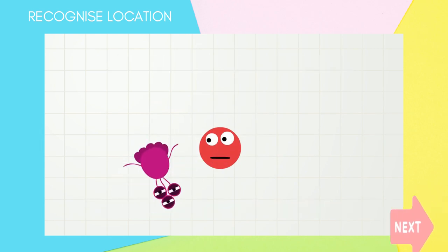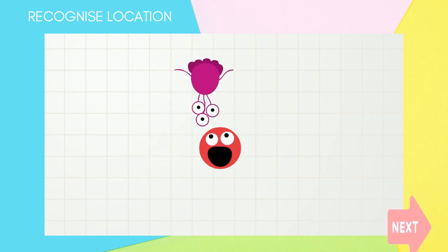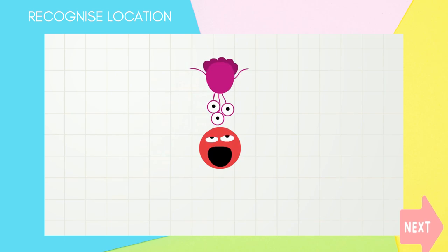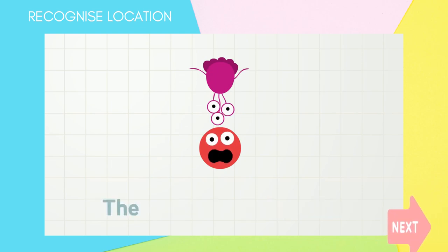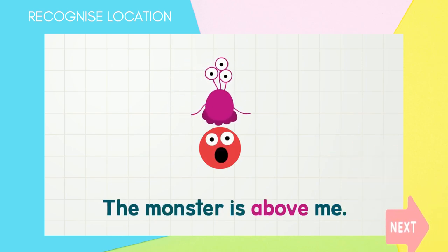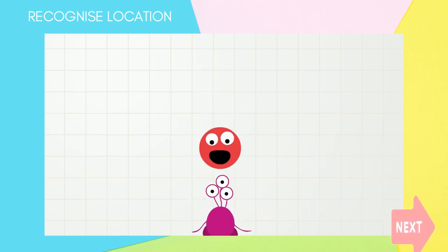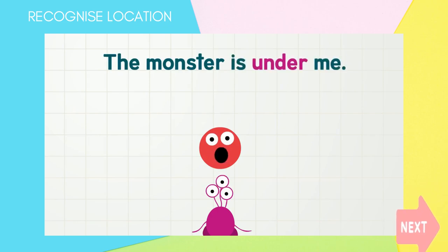The monster is upside down! It's still the same monster though. Where is the monster now? The monster is on top of me! Or we can also say, the monster is above me! Above you! Now where is the monster? The monster is under me! Or we can also say, the monster is below me! Below you!